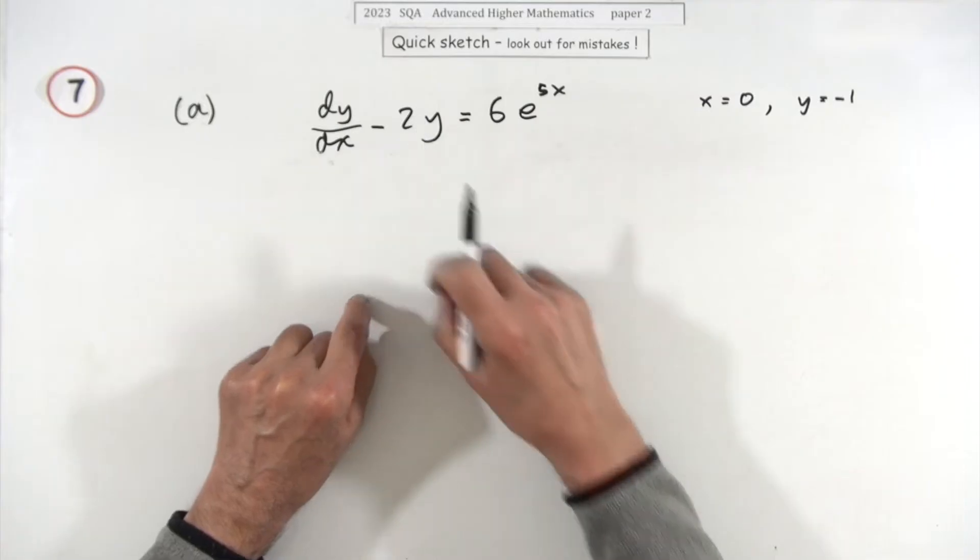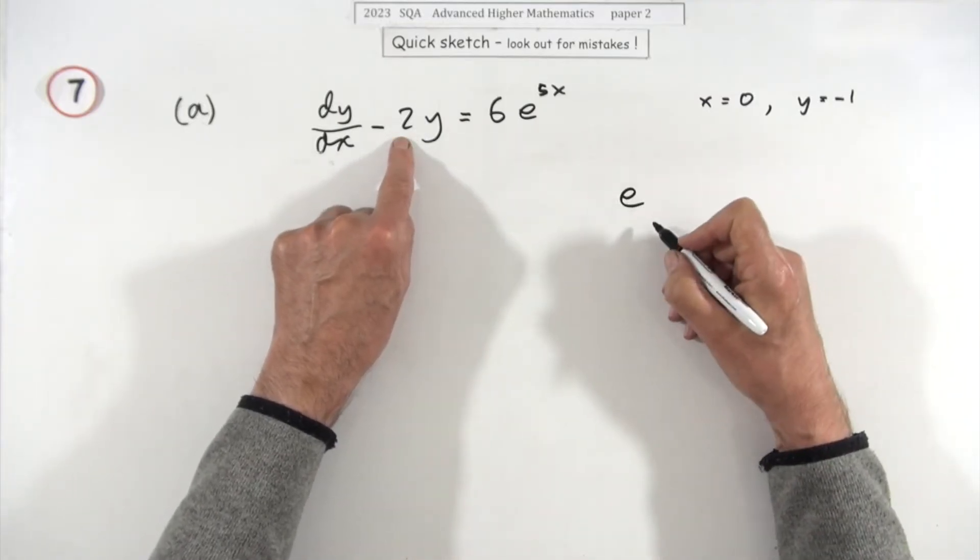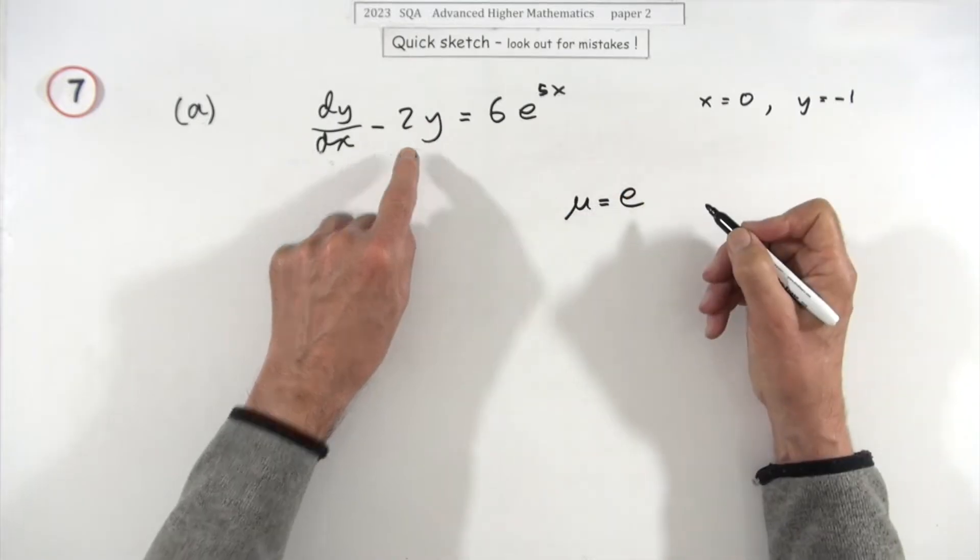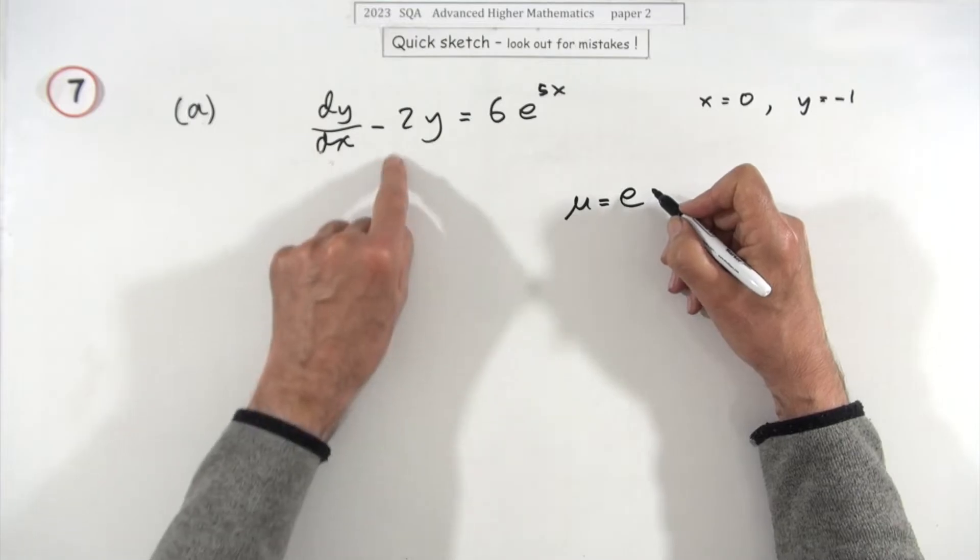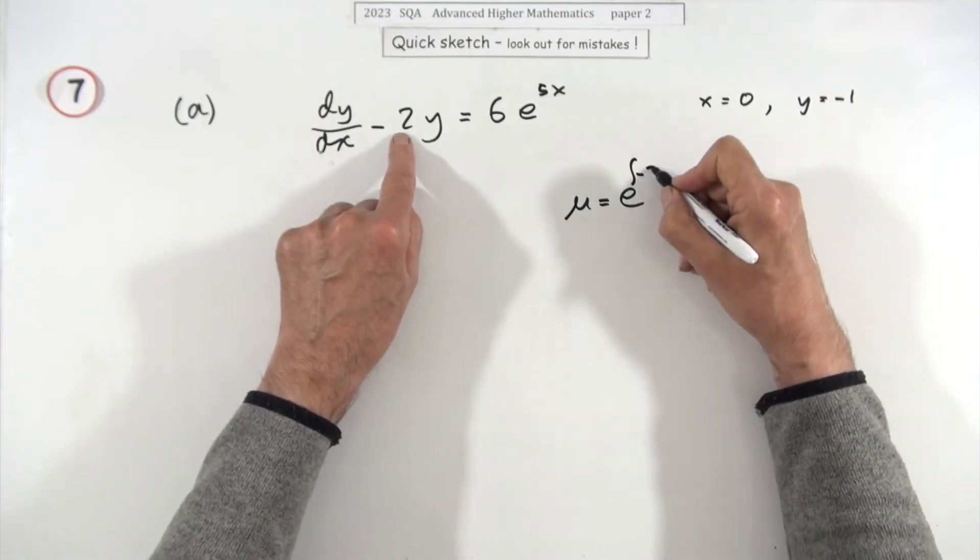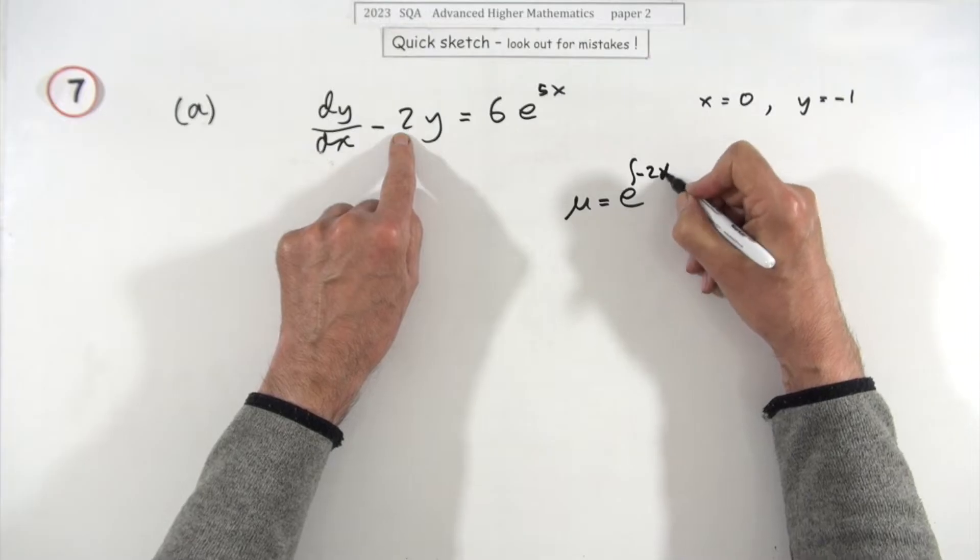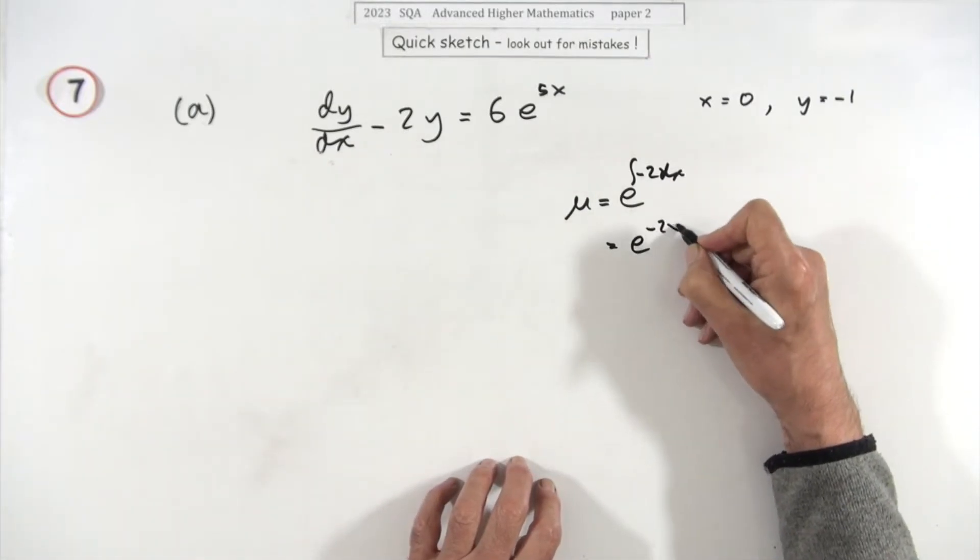The integrating factor, which essentially is this term here that you multiply everything by, would be e to the—just build that back up—the integral of 2dx, so that's just going to be e to the negative 2x. Yes, plus c, but that's just going to come out as a common factor.